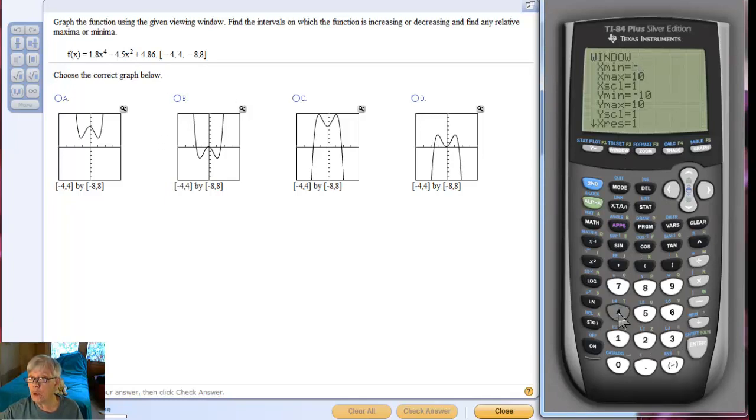I'm going to change to negative 4, positive 4, negative 8, and positive 8. Accidentally hit scale there and I don't want to change my scale. I want that to be positive 1 and stay there. Now I'm going to go to y min, which is going to be negative 8, and to y max, which is going to be positive 8.